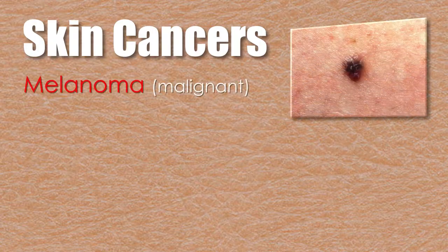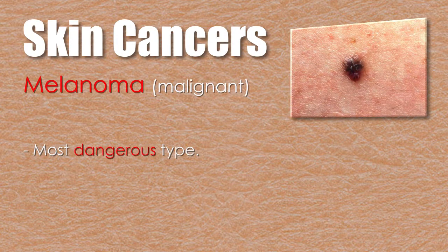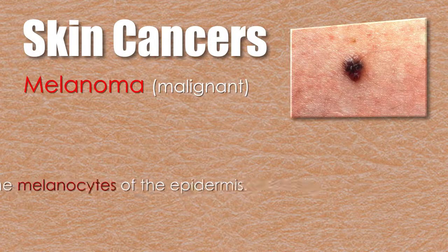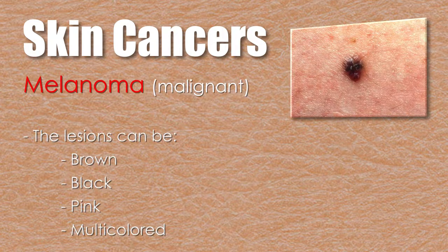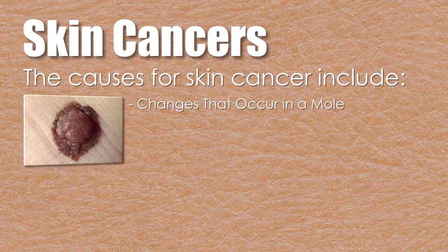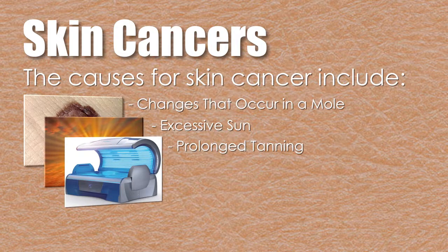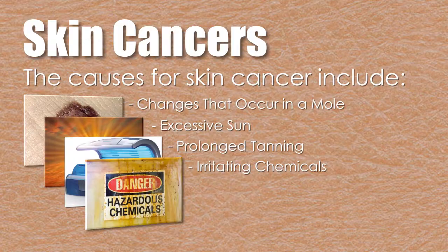Melanoma is a malignant cancer and the most dangerous form of skin cancer. It develops in the melanocytes of the epidermis; the lesions can be brown, black, pink, or multicolored. Causes for skin cancer include changes in a mole, excessive exposure to the sun, prolonged use of tanning beds, irritating chemicals, or radiation.